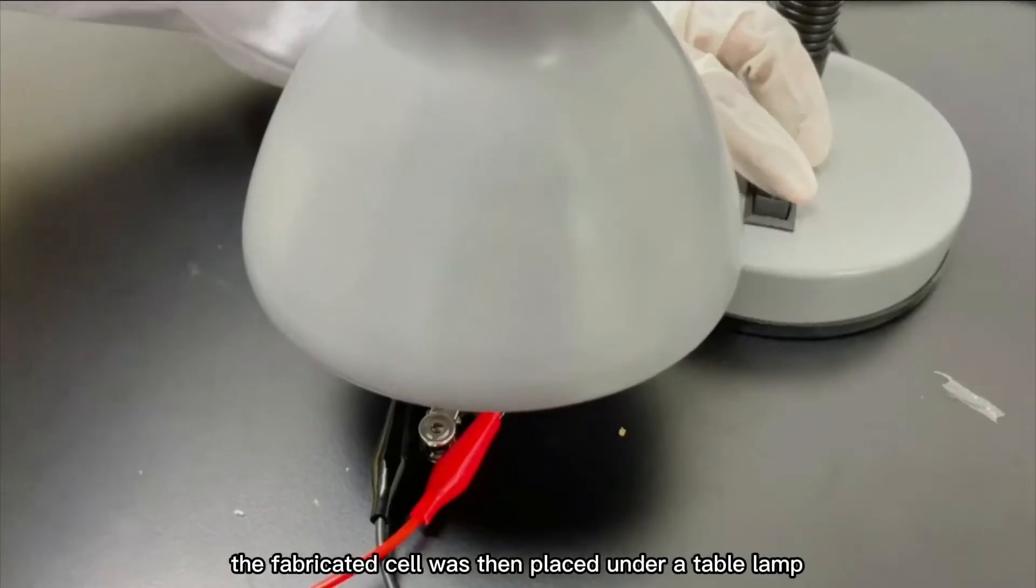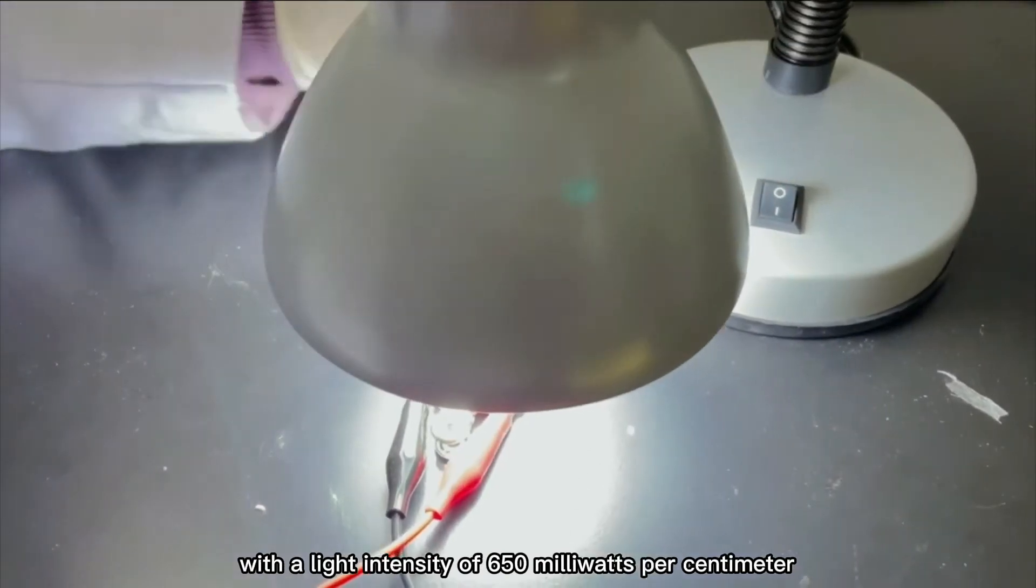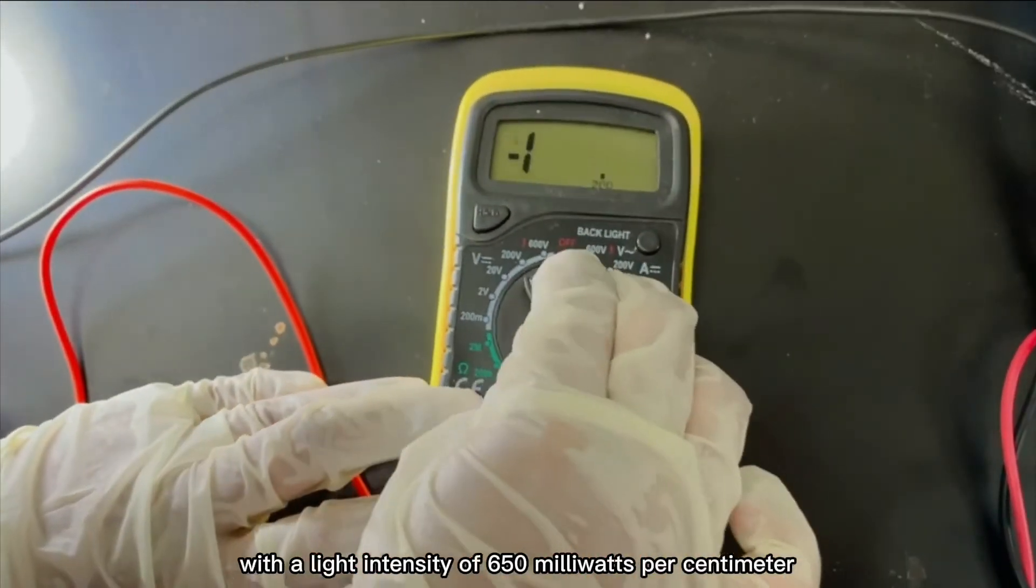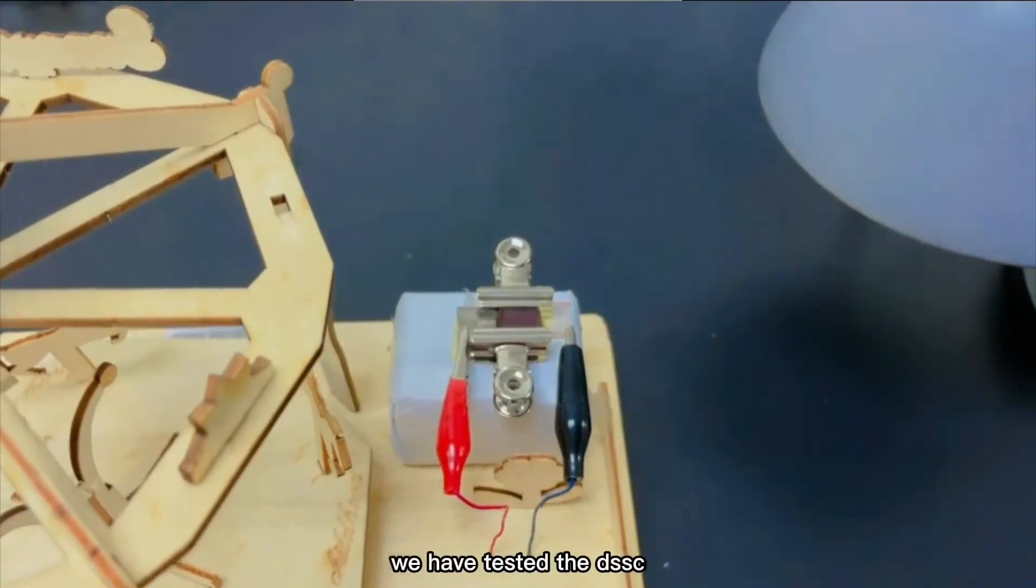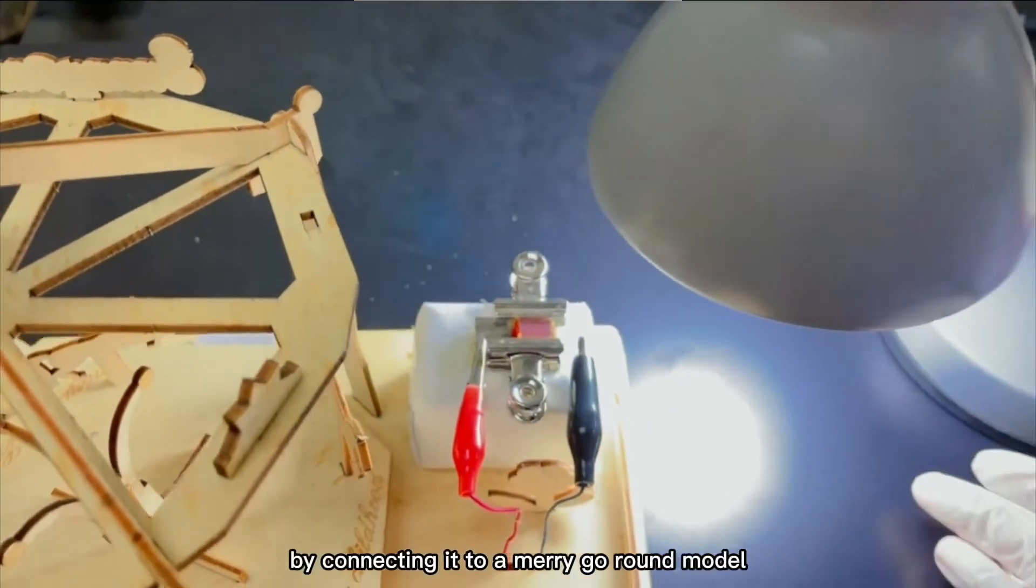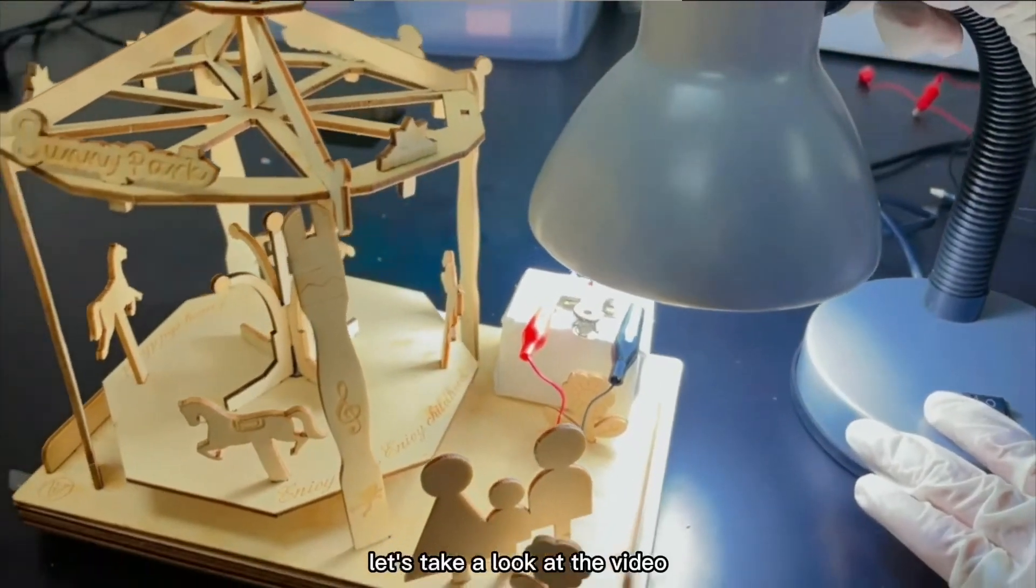The fabricated cell was then placed under a table lamp with a light intensity of 650 milliwatts per cm squared to test the potential of our prepared material. We have tested the DSSC by connecting it to a merry-go-round model. Let's take a look at the video.